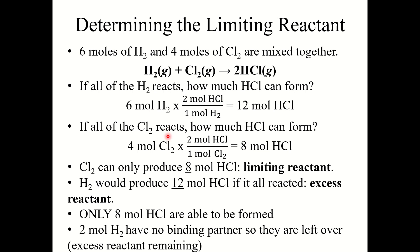Now let's look at the other side. If all of the Cl2 reacts and we assume excess H2, four moles Cl2 times two moles HCl over one mole Cl2 gives eight moles of HCl. So Cl2 can only produce eight moles of HCl, whereas H2 can produce 12 moles of HCl. Therefore, Cl2 is the limiting reactant and H2 is the excess reactant. The theoretical yield here would be eight moles HCl — it is based upon the limiting reactant. Two moles of H2 are left over as the excess reactant.